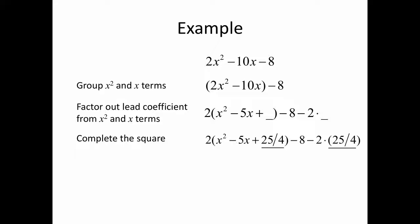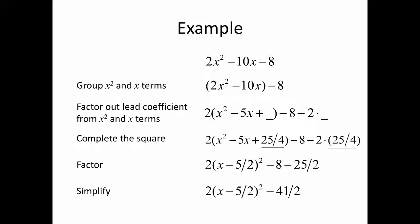Inside we add 25 fourths; outside we take away 2 times 25 fourths. We factor that trinomial as a perfect square into 2 times x minus 5 halves, squared, and then simplify the constant term.